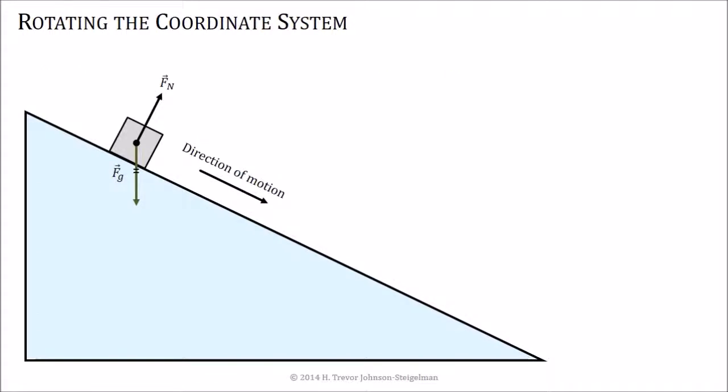Typically if we can rotate the coordinate system so that the object is moving along it, it makes our life a lot easier. So we've got an object sliding down an incline, we've got the normal force, we've got the gravitational force, we know which way it's moving. If we draw our coordinate system in the traditional horizontal vertical way, you draw the forces on there, that would be the free body diagram. But now we want to break it into components along that.